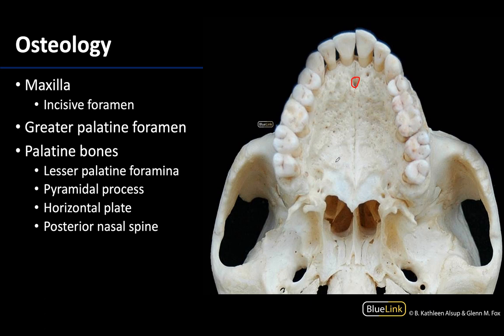Next, let's locate the greater palatine foramen, which is going to be in this region right here — usually medial to the second molar. On this particular donor it is actually a bit more posterior and closer to the third molar, so that's a normal variation.